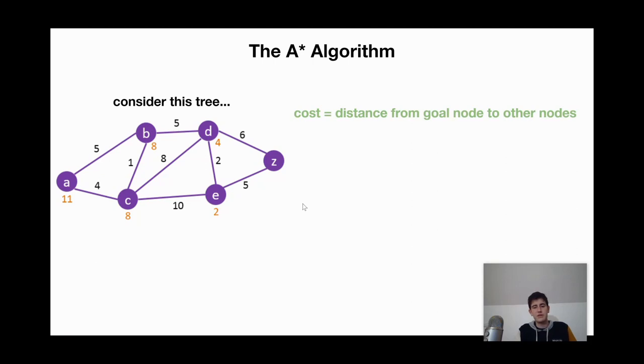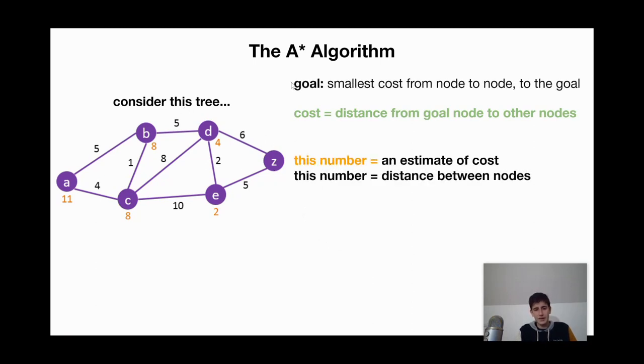Okay, now let me explain what this means in the context of the A-star algorithm. So first we should define cost. And cost is the distance from some goal node, Z, to other nodes. Now the goal of the A-star algorithm is to have the smallest cost from node to node, just to ultimately end up at the goal.